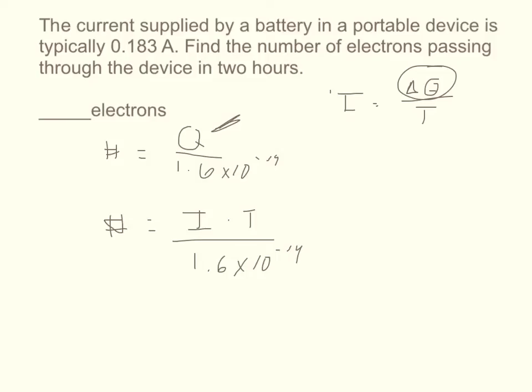So now when you plug in I, I is in the right units. You just plug in 0.183 for I which gives you amps. And T you've got to convert from hours to seconds. So you take 2 times 3600 seconds per hour. So 2 times 3600 gives you 7200.